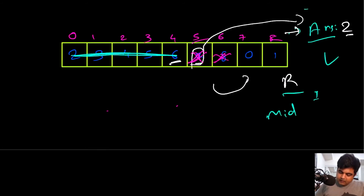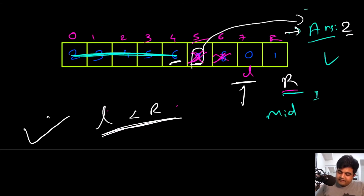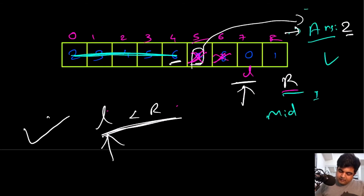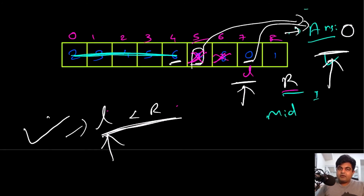Now our left pointer and right pointer are at new positions. We compare left and right — left is actually less than right. That is the ideal scenario: left is at the position of the minimum. We compare the left value with the current answer: current answer is two, but left value is zero, so we update the answer to zero. This is the correct answer and we return it.